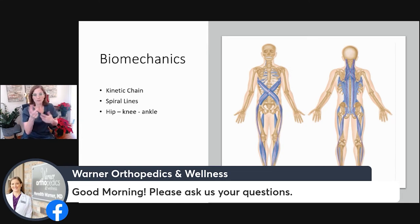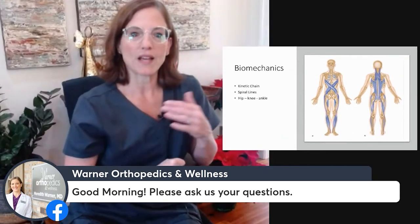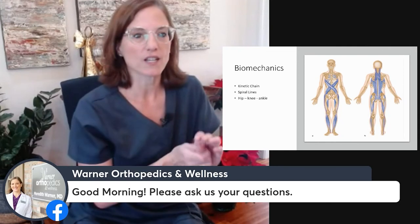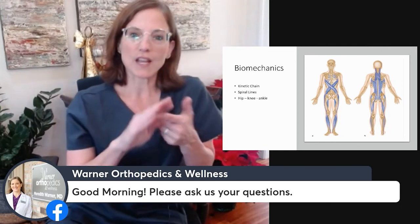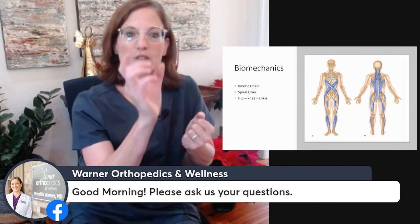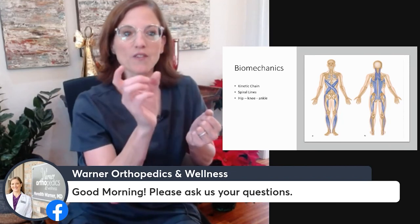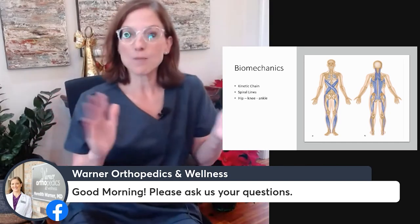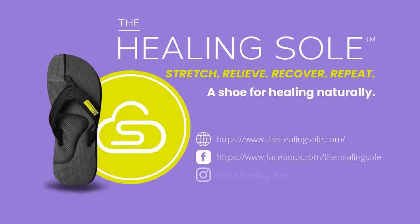In my clinic, we focus on these concepts to get people functionally improved by fixing the kinetic chain and its connections to the spine. The kinetic chain is important, the spiral lines are important, and obviously what the hip does affects what the knee does, which affects what the ankle does. The old song is true — the hip bone's connected to the knee bone. It's very important and it's always forgotten by most providers.